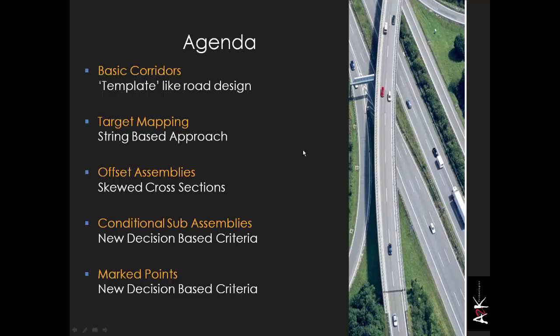The agenda today is all about corridors. Basic corridors are template-style designs which are standard for all software packages. Target mapping is basically adding strings to the equation. From there we go into offset assemblies. The first two are quite basic and are in nearly every package. The offset assemblies are more interesting, and the phrase 'skewed cross-section' gives a hint of what's coming.